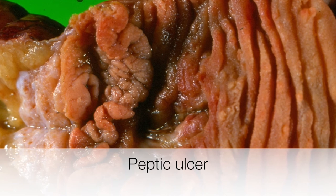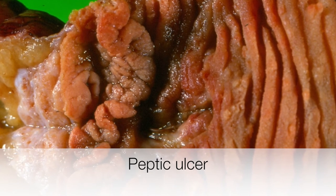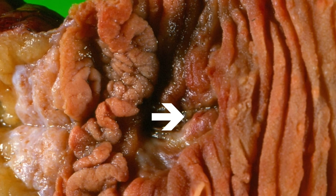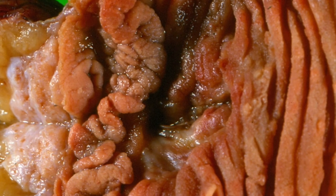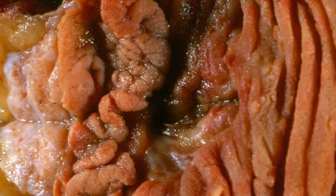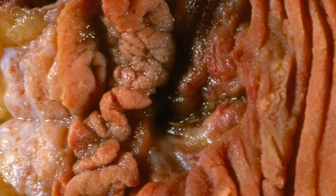Here is a peptic ulcer and the base is composed of granulation tissue. As the ulcer ages, the granulation tissue will start to contract and become more fibrous, and that is why chronic ulcers can result in strictures forming and cause obstruction.